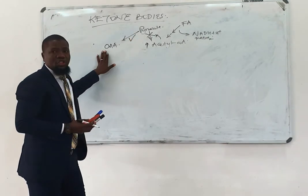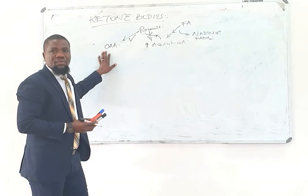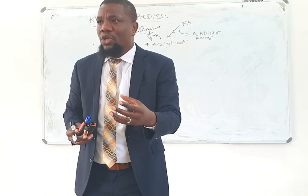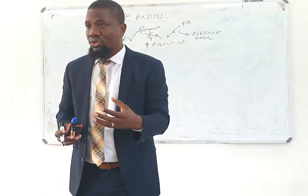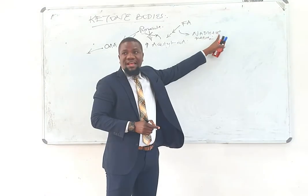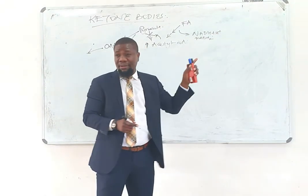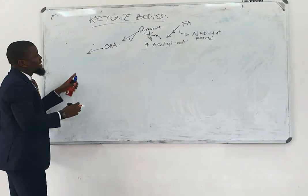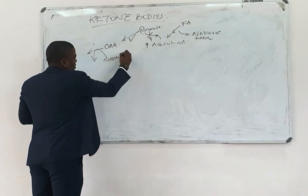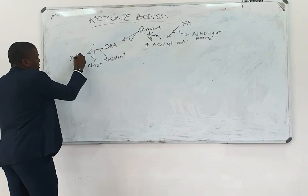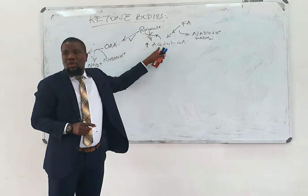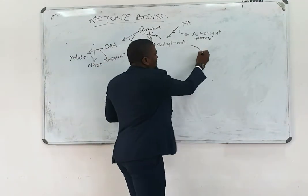The consequence is that pyruvate channels into production of oxaloacetate. This is happening under gluconeogenic conditions when somebody has been starving for a very long time. However, due to the high amount of NADH available and a reduced amount of NAD+, this oxaloacetate would actually be quickly reduced to malate.